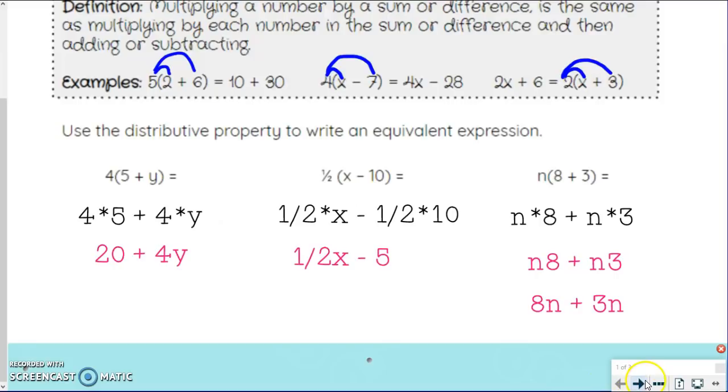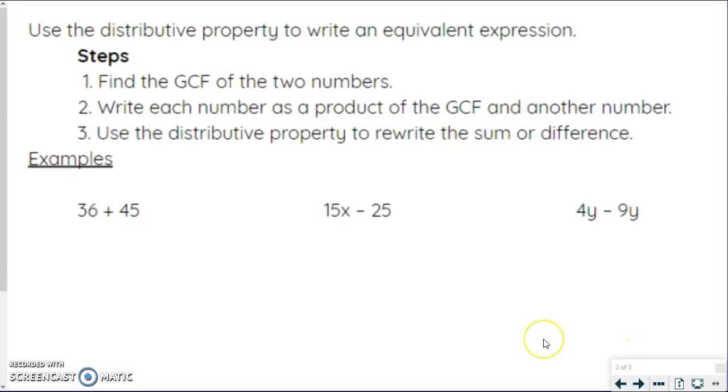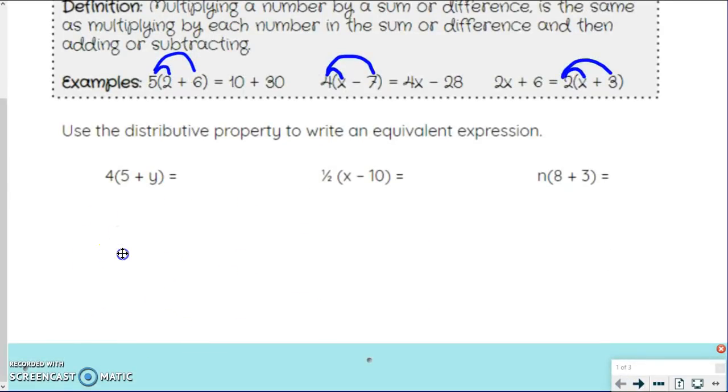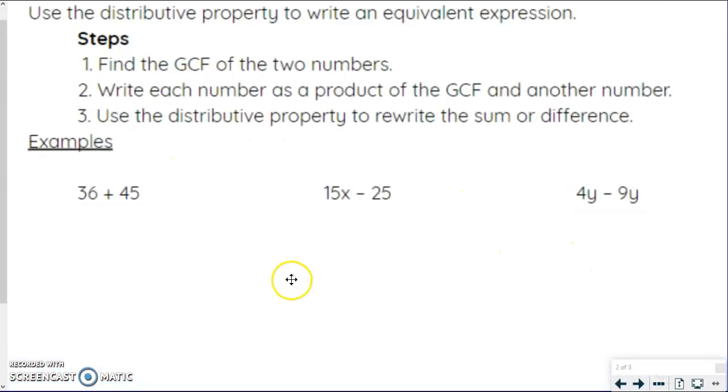So that's the forward way of doing it. Let's look at what I call the backwards way. This is the way you've actually done before already. We are going to use the distributive property to write an equivalent expression, but this time we're going to work backwards. We're going to find the GCF of the two numbers and pull that out. Really it's dividing to rewrite it with the sum or difference, using that distributive property to rewrite the sum or difference, just like you did before.